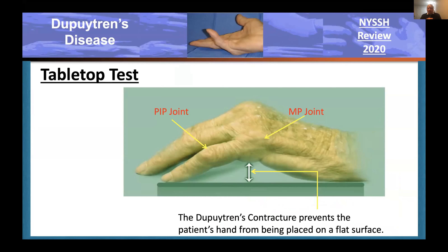The tabletop test was invented by John Huston. It's very simple: if the contracted fingers cannot extend enough to place the fingers and palm on a flat surface at the same time, you have enough Dupuytren's disease to think about therapeutic intervention. John used this because he worked in Australia and patients sometimes came hundreds of miles to see him, so he taught patients to do the test for themselves.